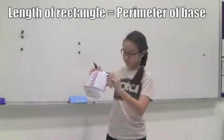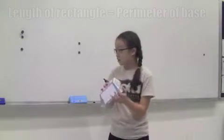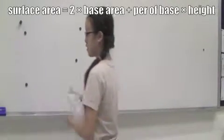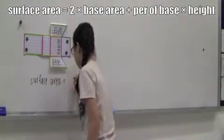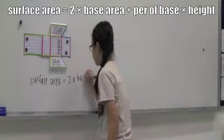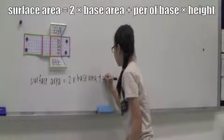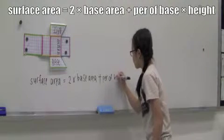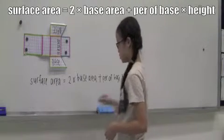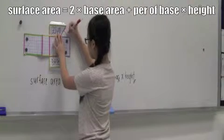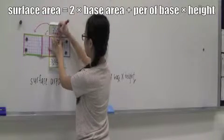Orange with orange, blue with blue, green with green, and yellow with yellow. Therefore, the total surface area equals two times the base area plus the perimeter of the base times the height.